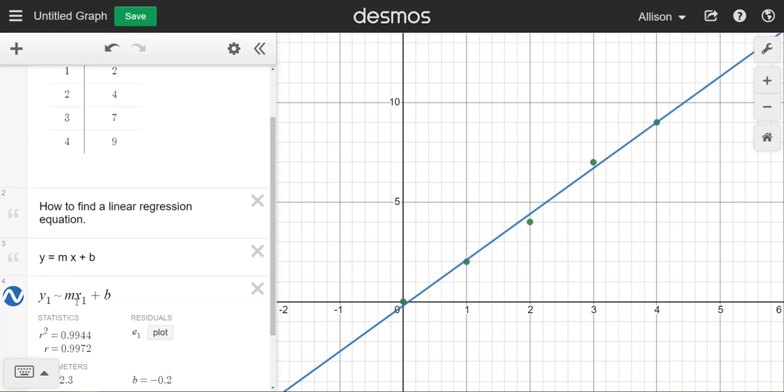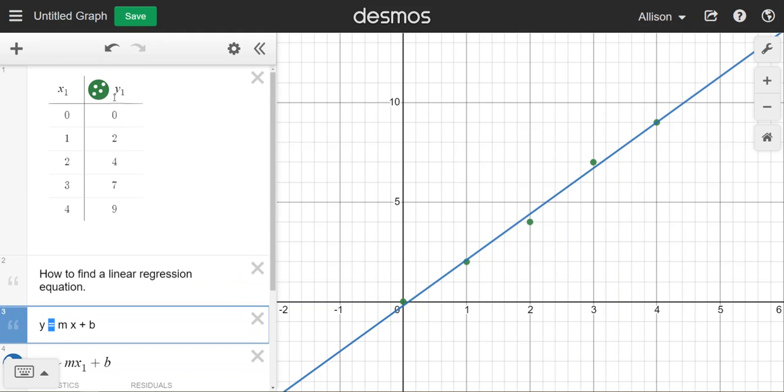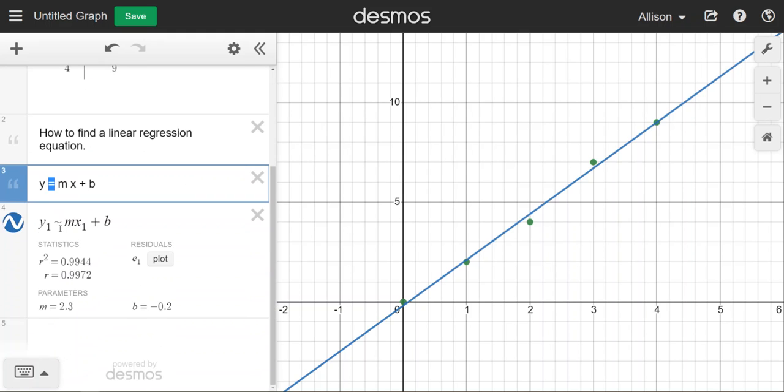A couple changes from the original form of the line: we change the equal sign to approximate to give Desmos the command to do regression to approximate a line. Then we don't use x and y in the regression statement; we need to tell it where to find the data. Since this table has x1 and y1, I used x1 and y1. If you were in a table that had x2 and y2 or other labels, you would modify those the same way.